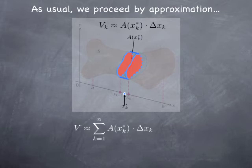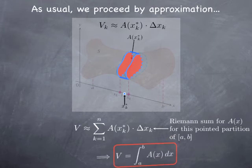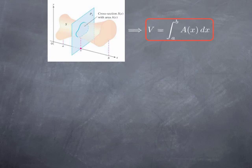This is just an approximation. But what we have here is a Riemann sum for the function A(x) for this pointed partition of my interval AB. The kind of error we make depends on how large these intervals are. As the parameter of the partition, which is the maximal width of the sub-intervals, goes to 0, the error I make is smaller and smaller. When we go to the limit, we obtain the integral of the function A(x) over the interval AB. So that gives us a nice integral formula to obtain the volume.